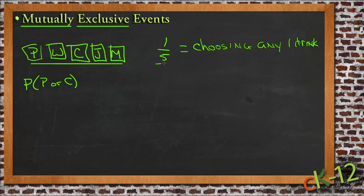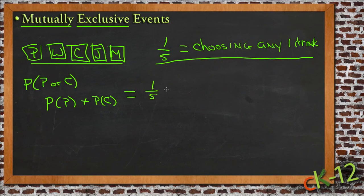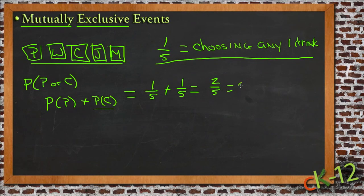So instead of just the probability of P or just the probability of C individually, mutually exclusive events give us P or C. To find the probability of P or C, we take the probability of P — the chance of any one drink, which is one-fifth — and add it to the probability of C, another one-fifth. So his chances of picking Pepsi or Coke would be two out of five, or two-fifths, which is about 40%.